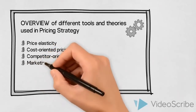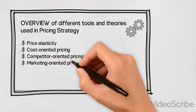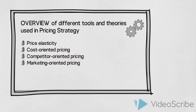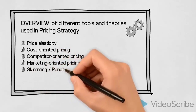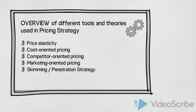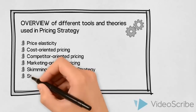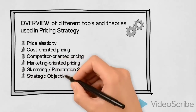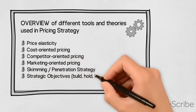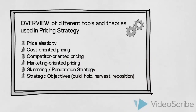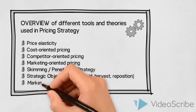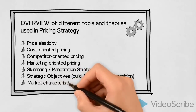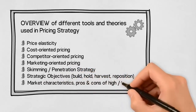Another option is marketing-oriented pricing, which involves looking in depth at how our customers value our product or service. Skimming or penetration strategies involve looking at the strategy behind the combination of a high or low price level and the promotional activity level. We can also consider our strategic objectives — whether we want to build, hold, harvest, or perhaps reposition a product has an impact on the price level we will choose. Finally, we can also look at some general market characteristics and the pros and cons of charging a high or a low price.